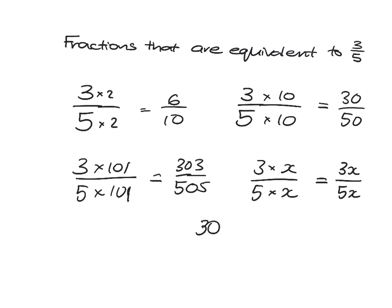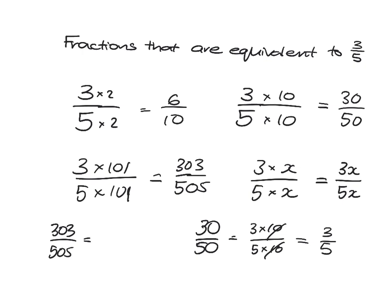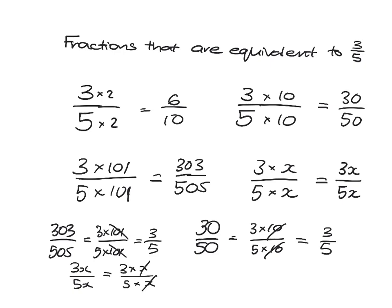If we started with 30 over 50, that's 3 lots of 10 over 5 lots of 10 — we can divide top and bottom by 10 to get three-fifths. Similarly, 303 over 505 is 3 lots of 101 over 5 lots of 101; divide top and bottom by 101 and you get three-fifths. And with 3x over 5x, since 3x means 3 times x and 5x means 5 times x, we divide top and bottom by x to get the equivalent fraction three-fifths.